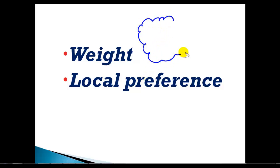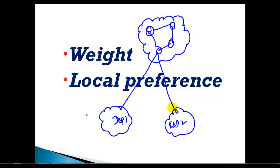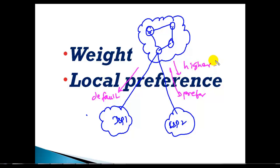Take an example — this is my AS and I have multiple routers with multiple exit paths. I have one connection to ISP1 and another connecting to ISP2 or two different autonomous systems. If I want to ensure a specific route is the default exit path, I can apply a higher weight or higher local preference on that route so that whenever my router decides to go outside the AS, it always prefers that route.